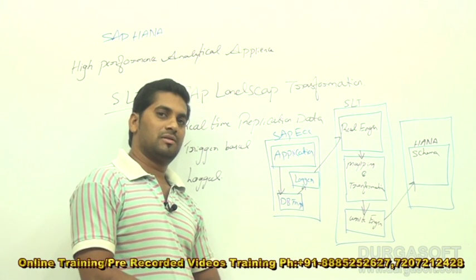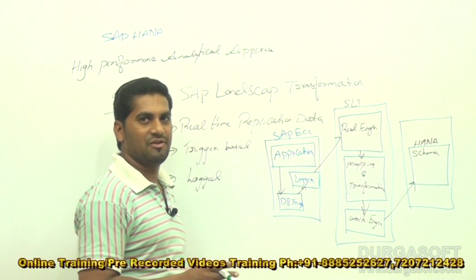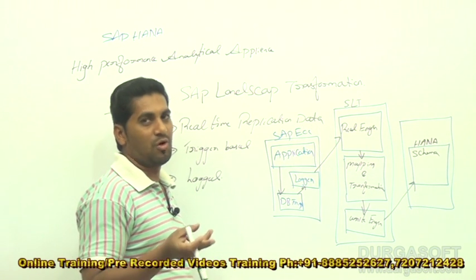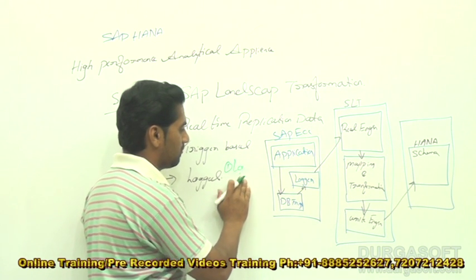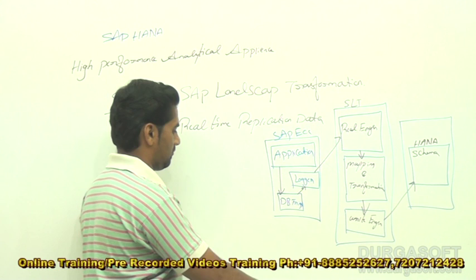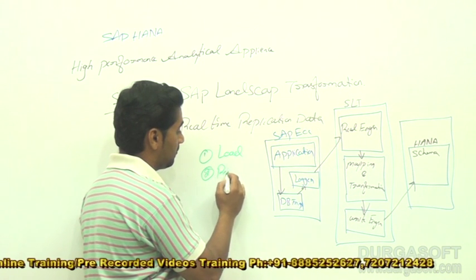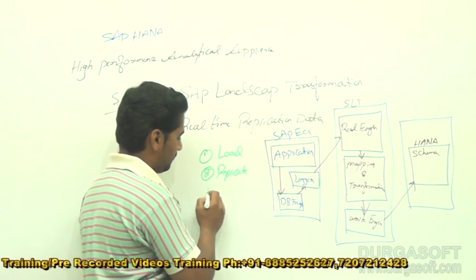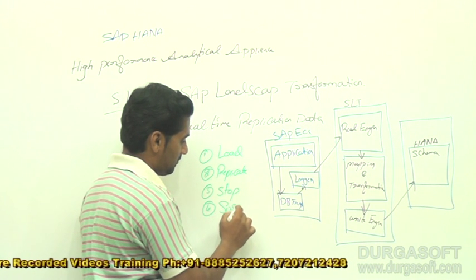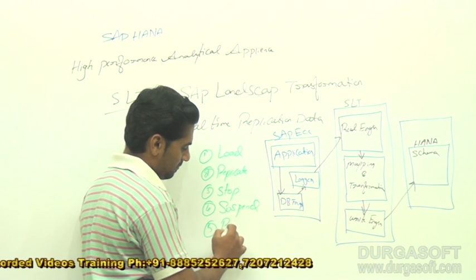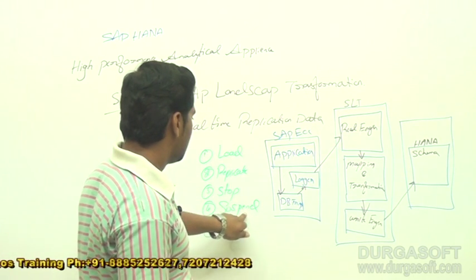In the SLT process, we get data provisioning options. The first option is the load option, the second is replicate, the third is stop, the fourth is suspend, and the fifth is resume. These are the five data provisioning options available in SLT.